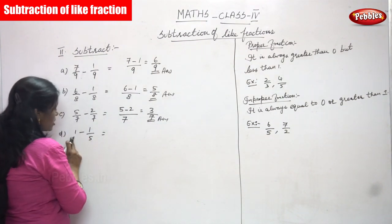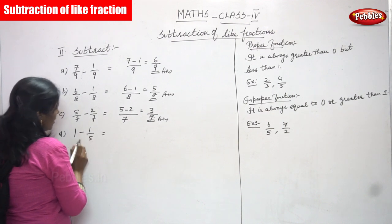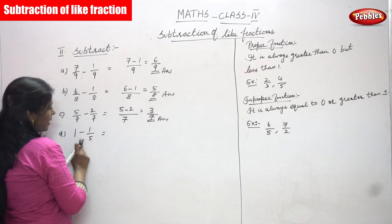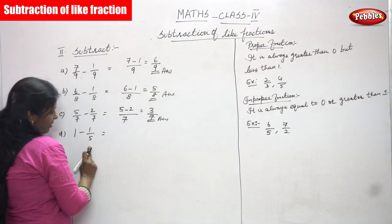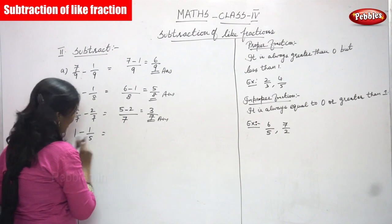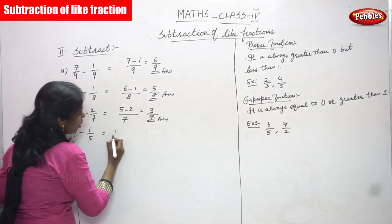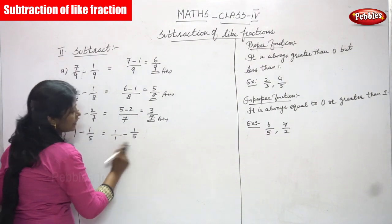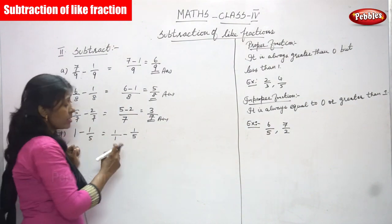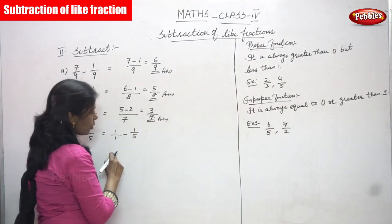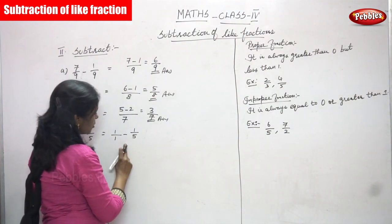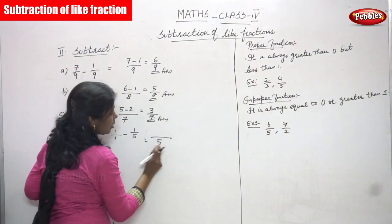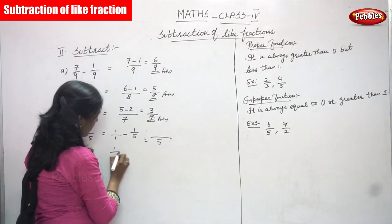The next question is 1 minus 1/5. Here, 1 is a whole number and 1/5 is a proper fraction. Since 1 has no denominator, you write it as 1/1, so the problem becomes 1/1 minus 1/5. Now the denominators are different, so this is not a like fraction. You need to find the LCM — for 1 and 5, you multiply 1 by 5 to get 5 as the common denominator.